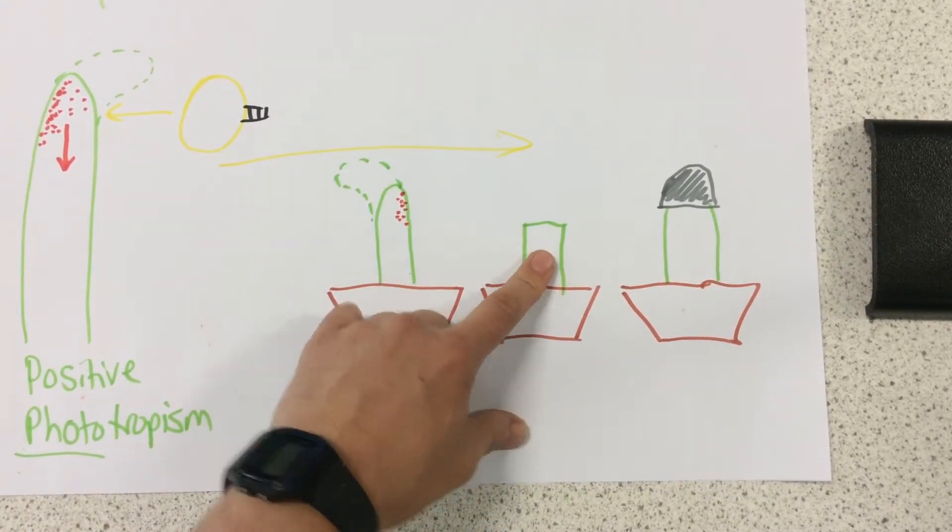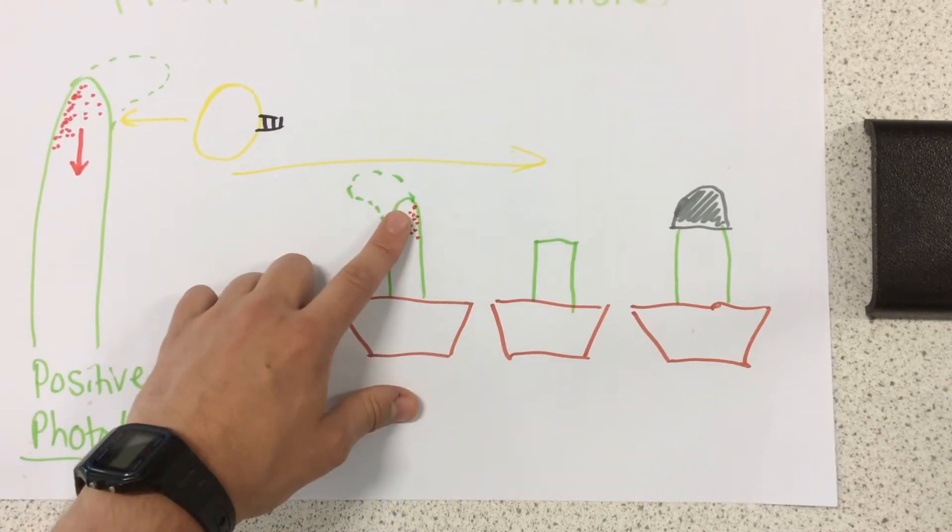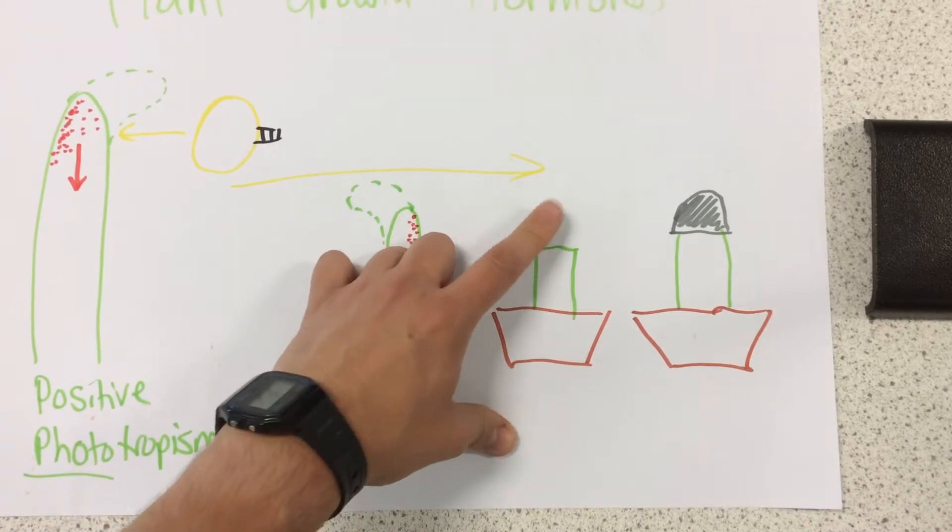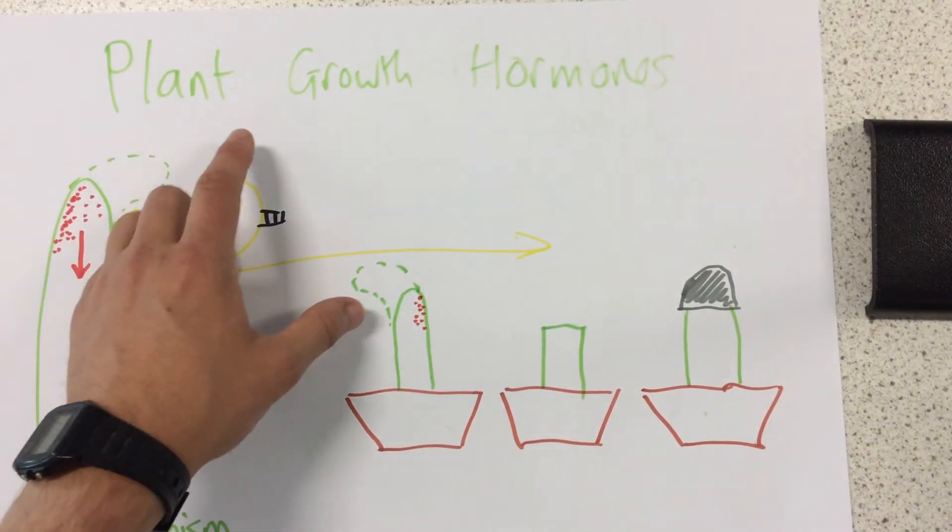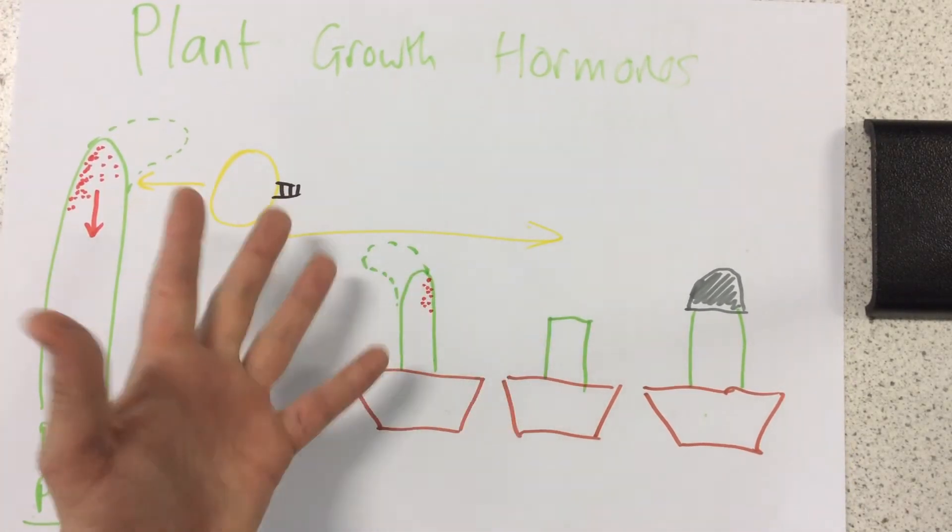Now this one here, because it's had the shoot cut off, the top of the shoot cut off, it's not producing any auxins at all. Because it's not producing any auxins at all, it will not grow. Remember auxins are plant hormones, plant growth hormones, that help the plant to grow. So without them, it's not going to grow.